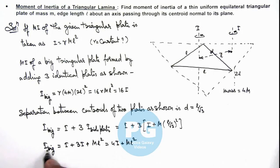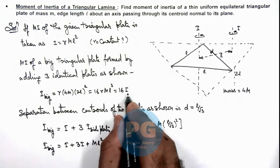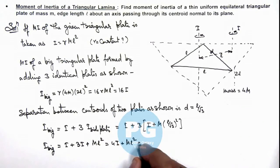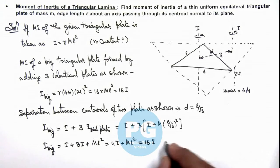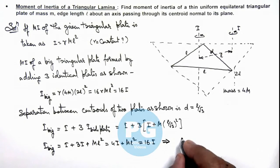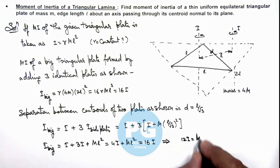Here we can write I_big as 16I we already calculated. So if we equate it to 16I, this implies the value of 12I = ml². The value of I will be 1/12 ml², that is the result of this problem.